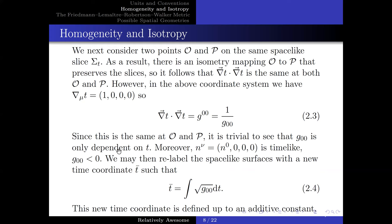Moreover, since n_ν is equal to (N_0, 0, 0, 0) is timelike, then g_00 is less than 0. We may then relabel the spacelike surfaces with a new time coordinate such that t̄ is equal to the integral of square root of g_00 times dt. And this new time coordinate is defined up to an additive constant.